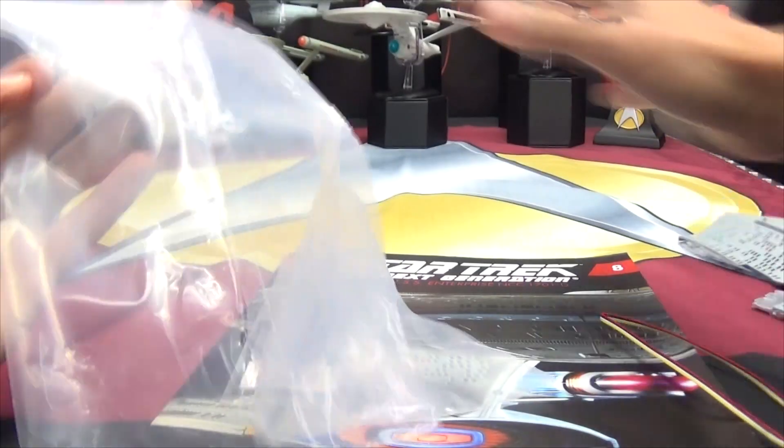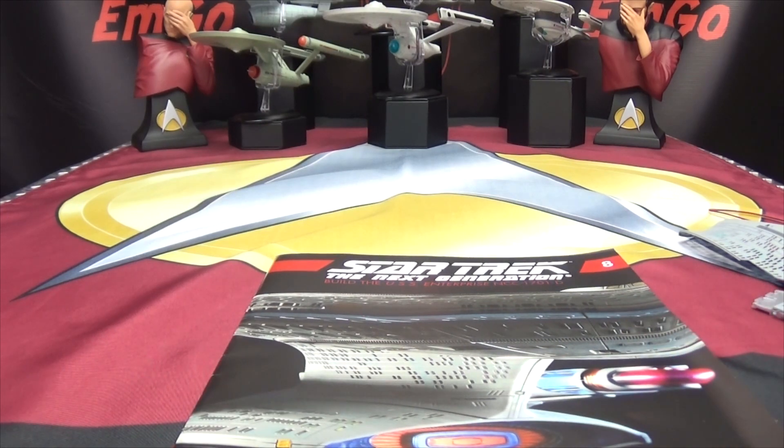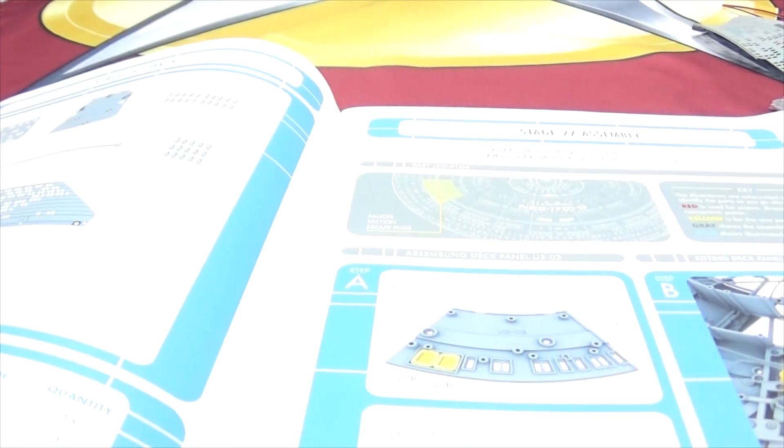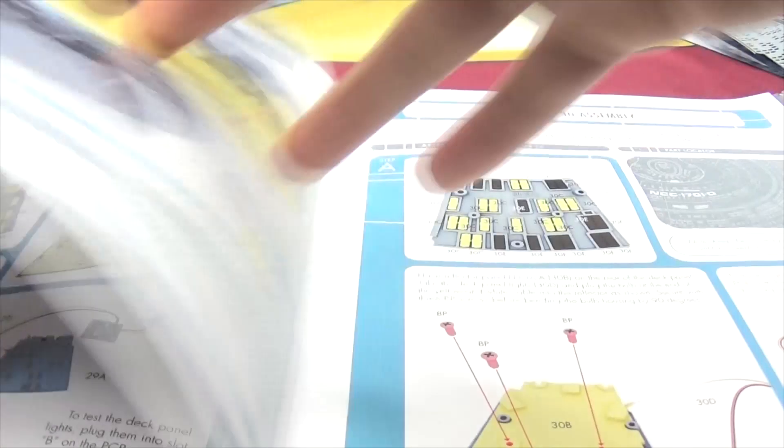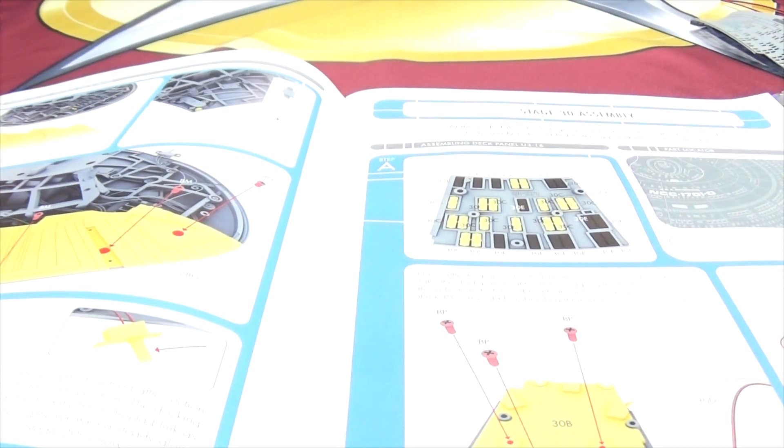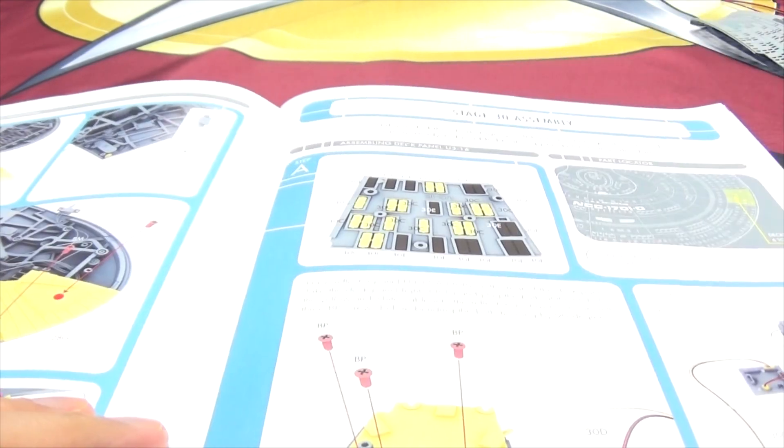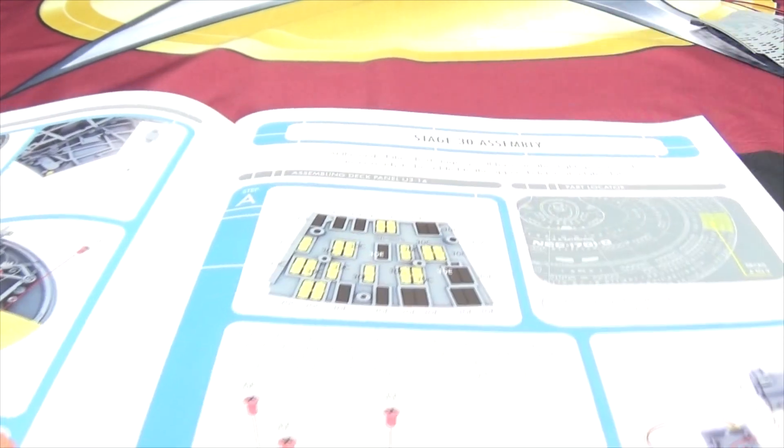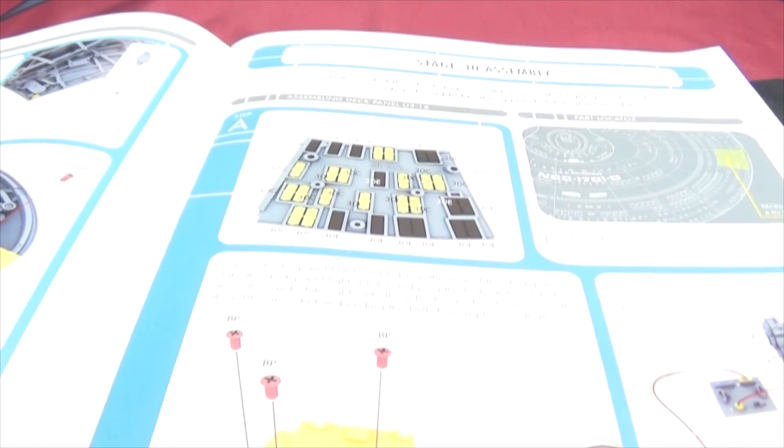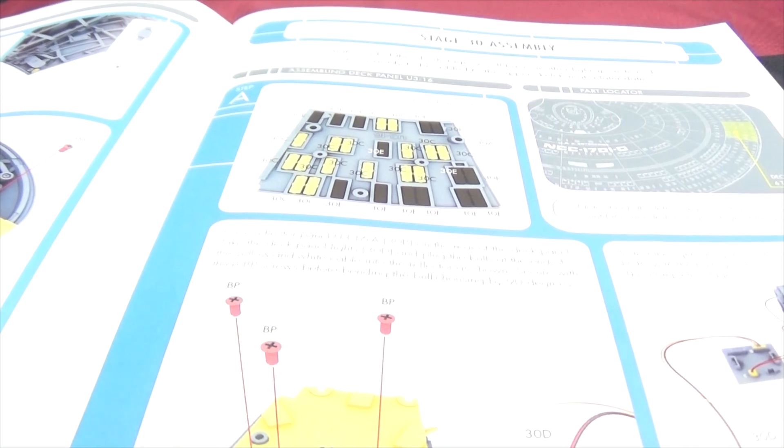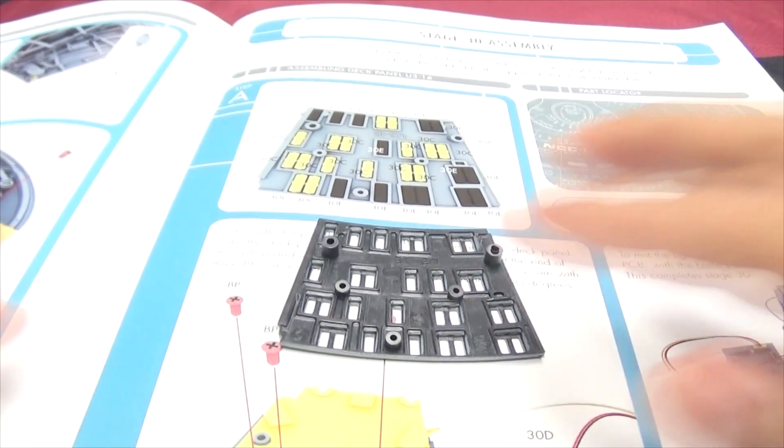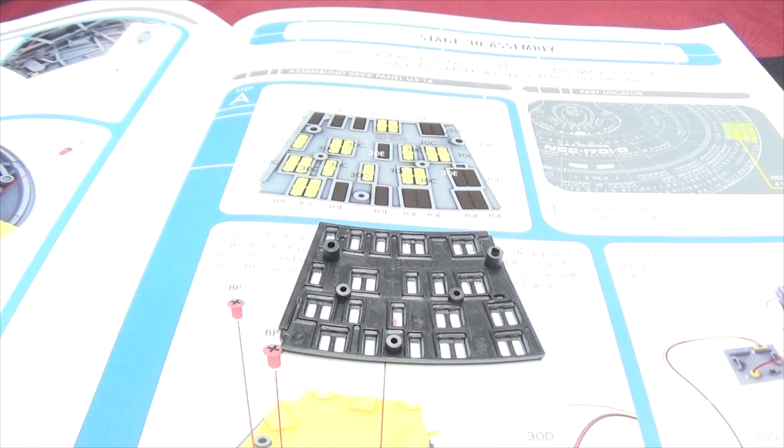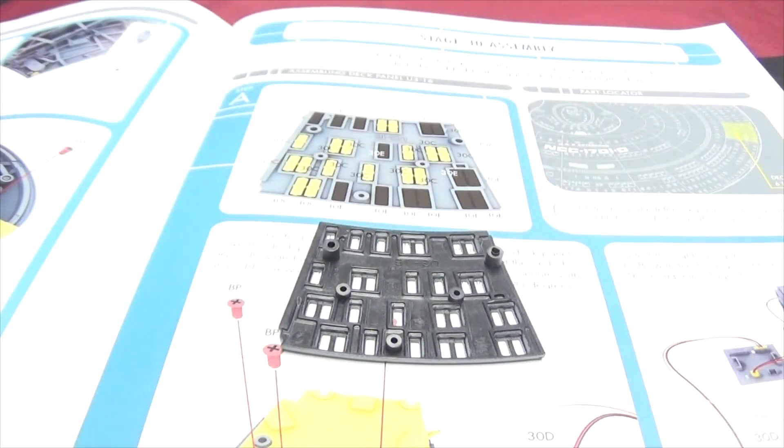Now let's open up our instructions. We are on stage 30, and what are we doing? More windows. Let's go with some more windows here. Release the panel and now we have to nip some more windows. So as always I will do this real quick off camera, be right back.